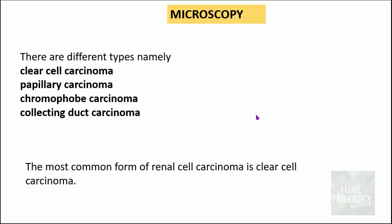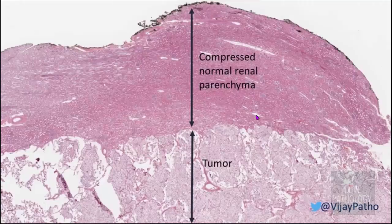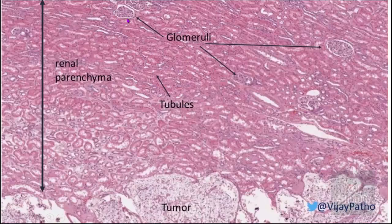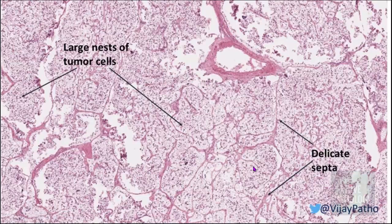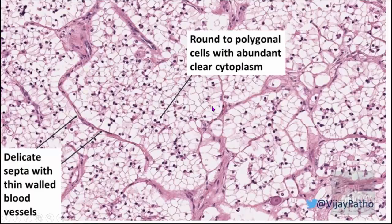At scanner magnification, you can see the compressed renal parenchyma adjacent to the tumor, which appears paler than normal. At higher magnification, you can identify the normal kidney by its glomeruli and tubules. The tumor consists of large nests of tumor cells separated by a delicate fibrovascular septa.